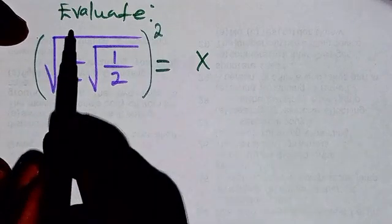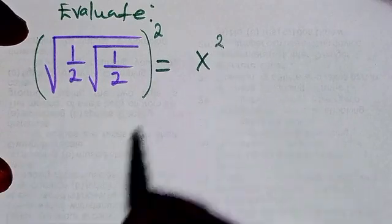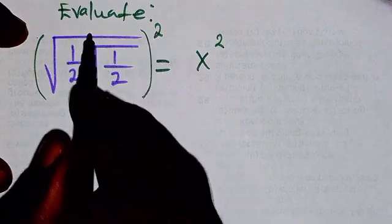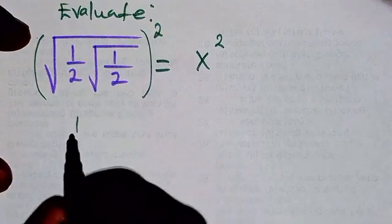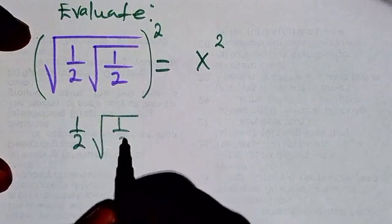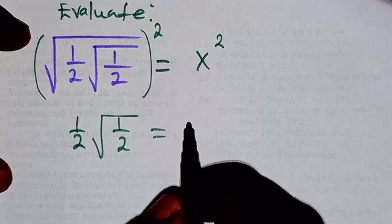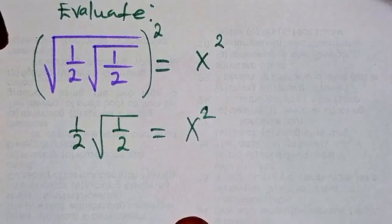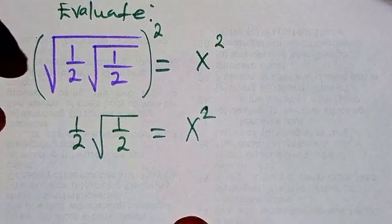What I'm going to do is that I'm going to square both sides so that I'll get rid of this. From there, this square will cancel the square root. I'm going to be having one over two, then one over two equals x to power two.